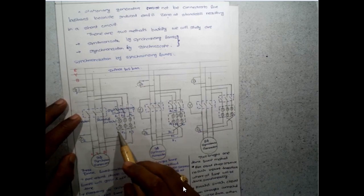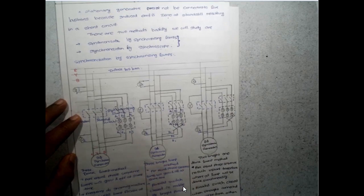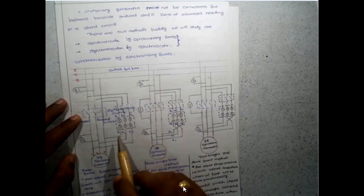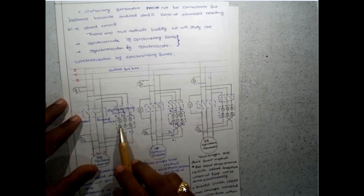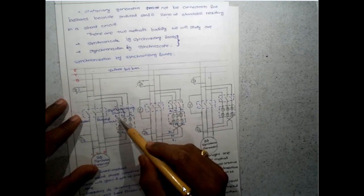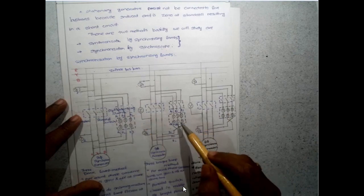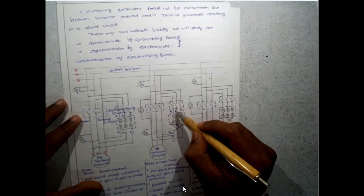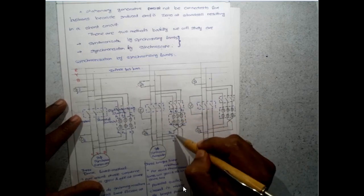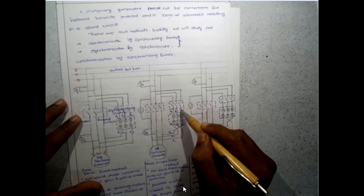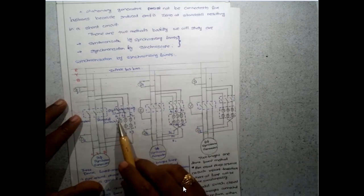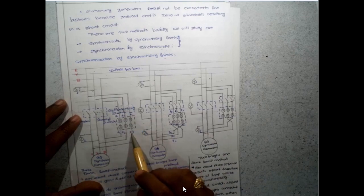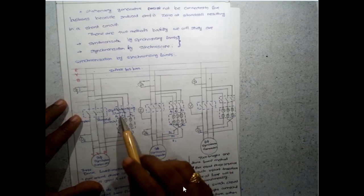Under this method, the phase sequence can be known from the phase sequence detector or indicator. The difference between the three methods is the way the lamps are connected to the two different systems. In the three dark lamp method, all lamps are straight connected. In the three bright lamp method, all are cross connected — a1 to b1, a2 to b3, a3 to b1. In the straight method, a1 to b1, a2 to b2, a3 to b3.